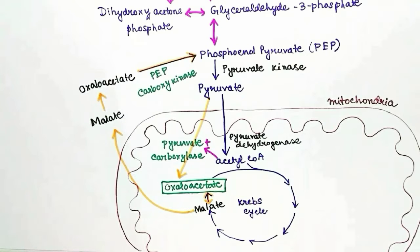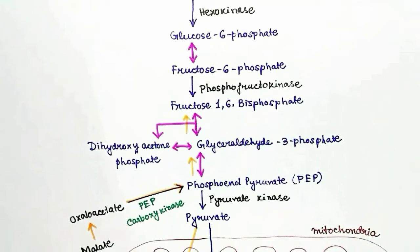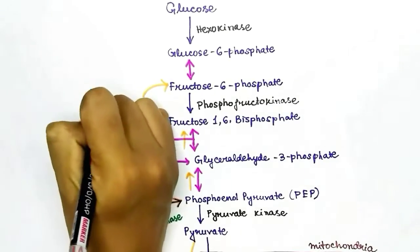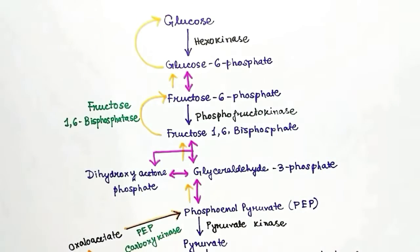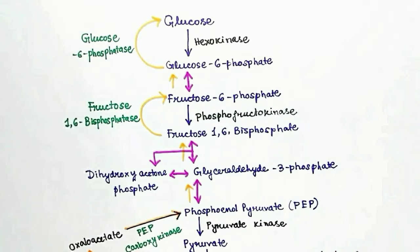Phosphoenol pyruvate can now travel in reverse through the glycolysis pathway using the same enzymes for the reversible steps. However, the conversion of fructose-1,6-bisphosphate to fructose-6-phosphate is not reversible, so a different enzyme called fructose-1,6-bisphosphatase is required. From fructose-6-phosphate to glucose-6-phosphate is reversible using the same isomerase, but the final step requires glucose-6-phosphatase. This is how pyruvate is converted to glucose in gluconeogenesis.